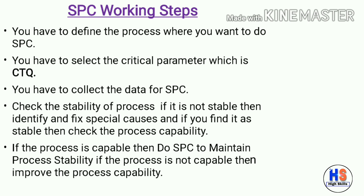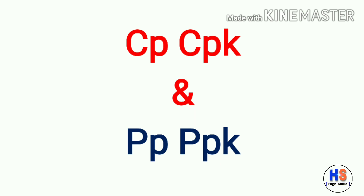If the process is stable, check the process capability. Fifth, if the process is capable, do SPC to maintain process stability. If the process is not capable, improve the process capability. These were the SPC working steps that we must follow.